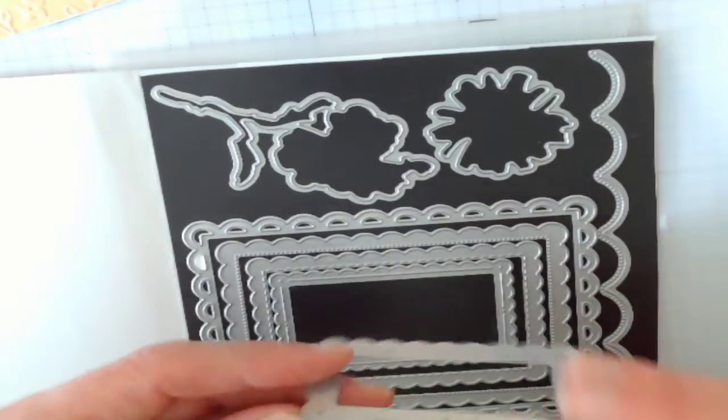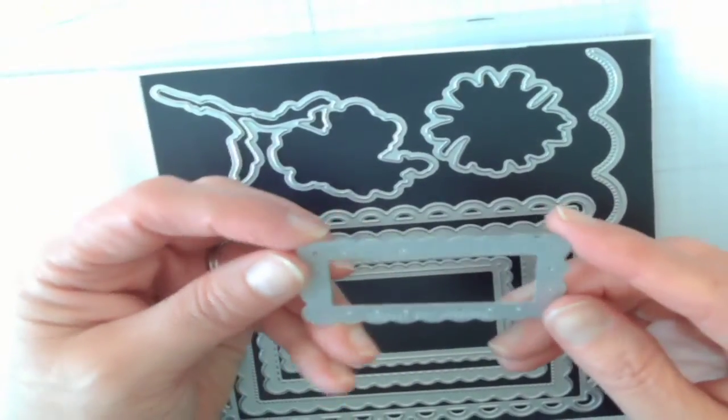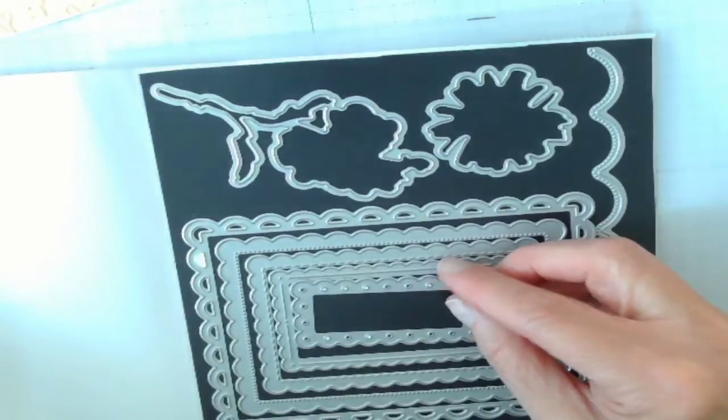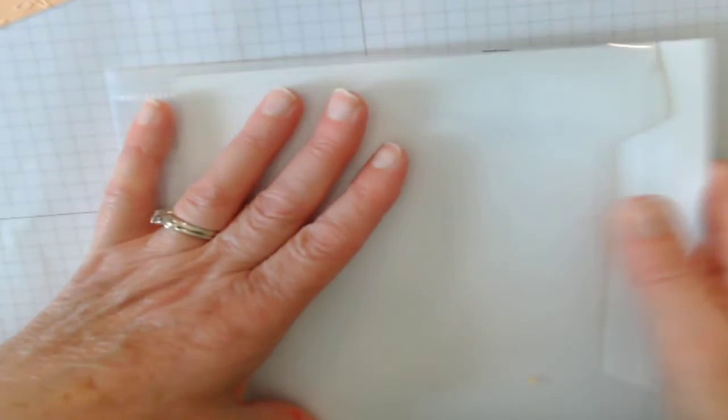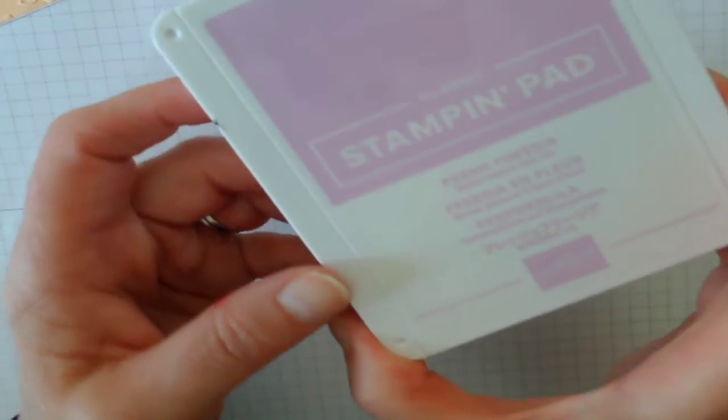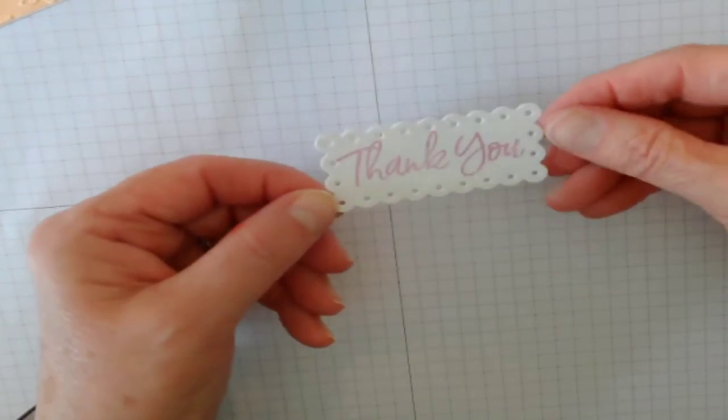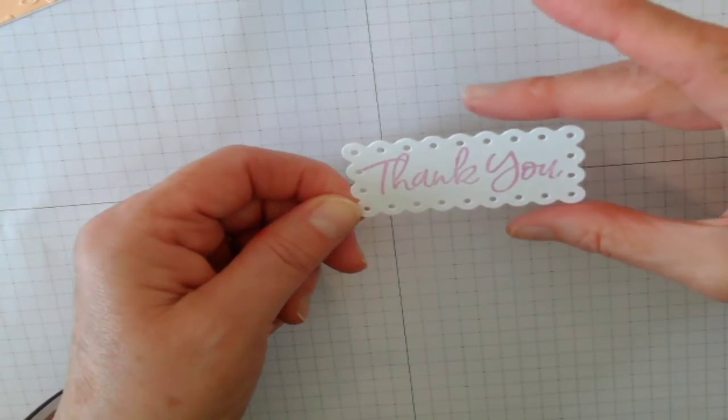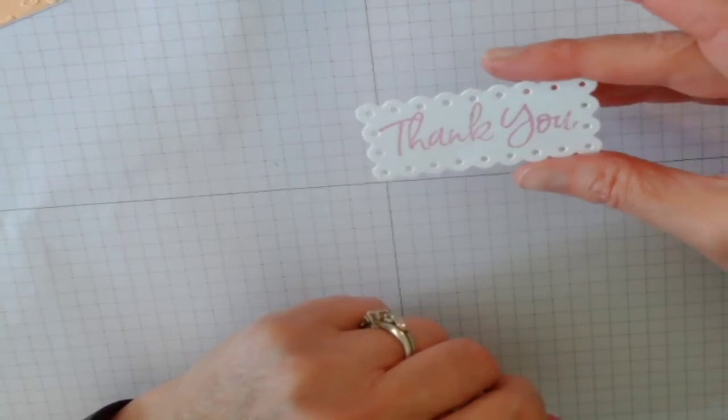The next thing that I did is I took our contours die set and I chose this to make my label. I put this through my Stampin' Cut and Emboss Machine and that made my label. I used our Fresh Freesia to stamp the sentiment on. It's a really cute die and makes a really cute label.